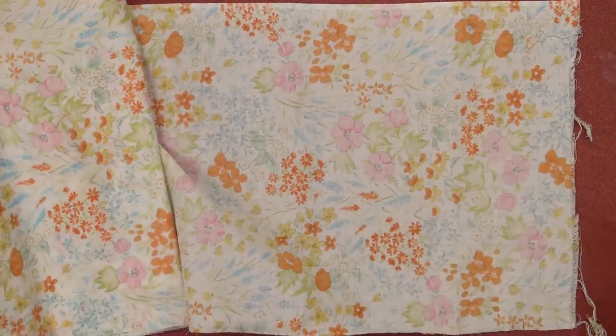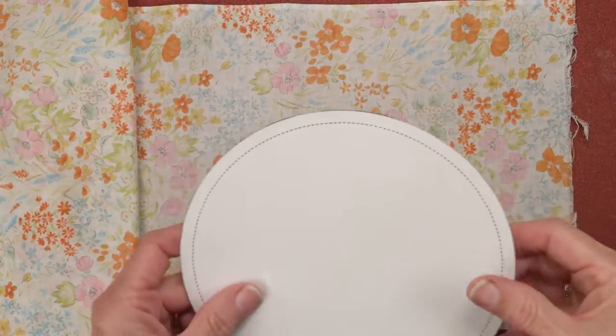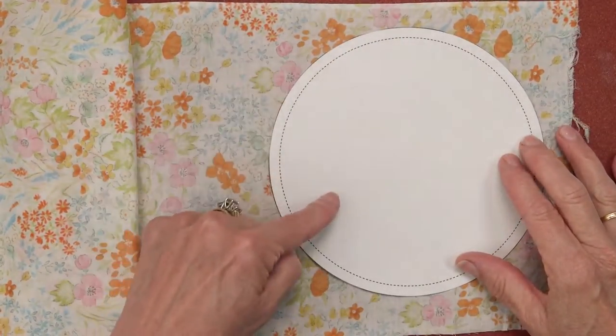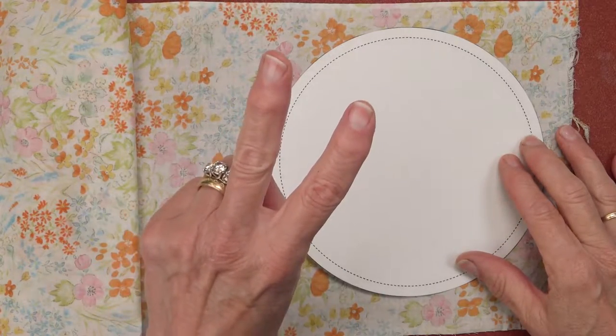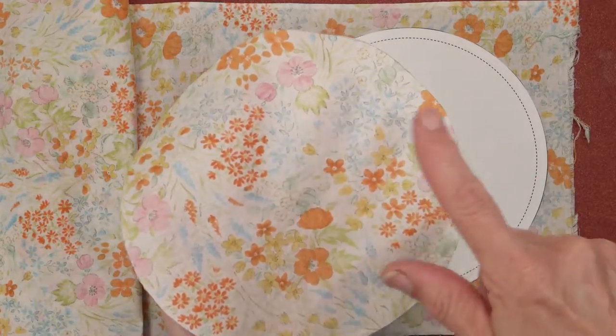Next place the fabric right side down on your sandpaper board single thickness and trace around the template twice. Use your scissors to cut out both circles.